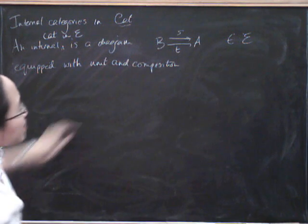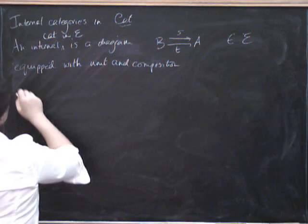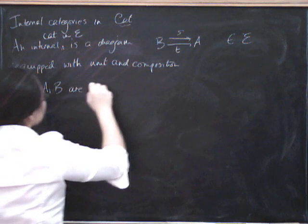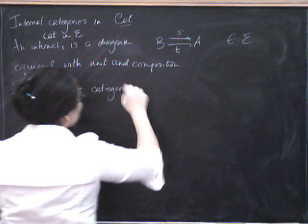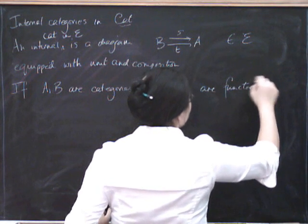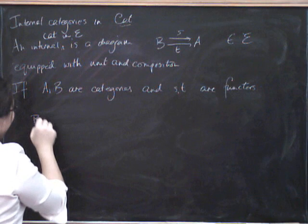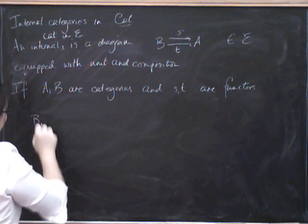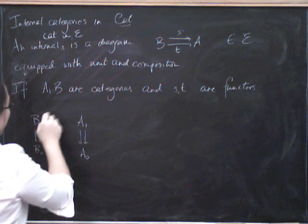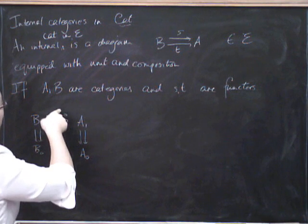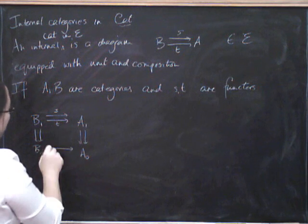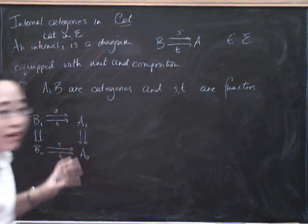So if this is a diagram in Cat, and A and B are categories and S and T are functors, then B itself has a set of morphisms, a set of objects, and a pair of source and target morphisms. And A has a set of morphisms, a set of objects, and a pair of source and target morphisms. Functor S has an action on morphisms and on objects, and functor T has an action on morphisms and on objects. So we get a diagram like this.